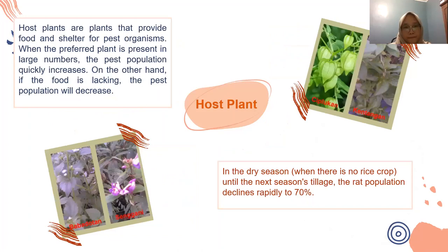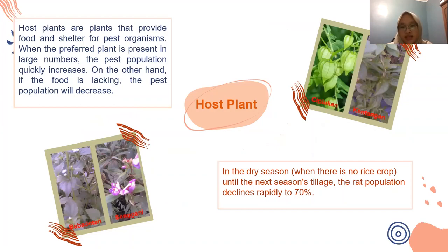Next, host plants. Host plants are plants that provide food and shelter for pest organisms. When the preferred plant is present in large numbers, the pest population quickly increases. On the other hand, if food is lacking, the pest population will decrease. In the dry season, when there is no rice crop until the next season's tillage, the pest population declines rapidly by up to 70%.